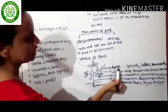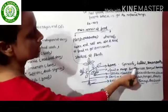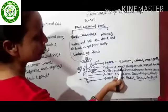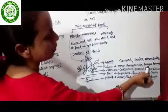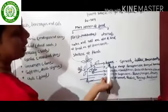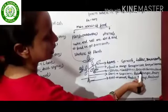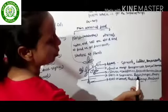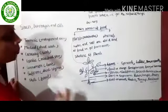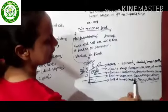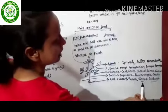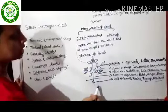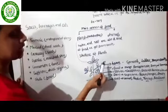Leaves like spinach, lettuce, and amaranthus; fruits like mango, pomegranate, and banana; flowers like cauliflower and broccoli; stems like sugarcane, potato, onion, and ginger; and roots like carrot, radish, turnip, and beetroot. You can see that each and every part of the plant is eaten by us.